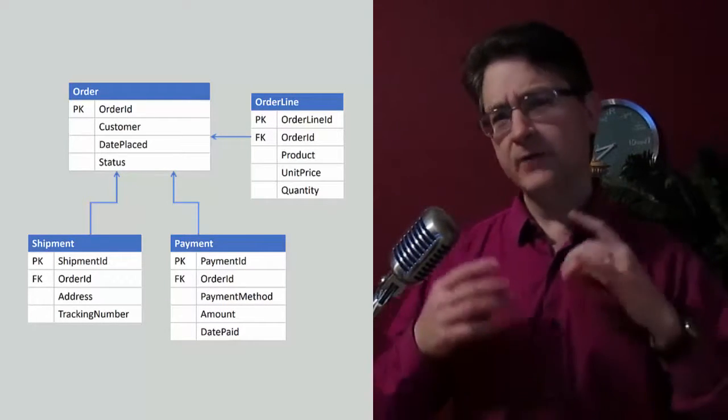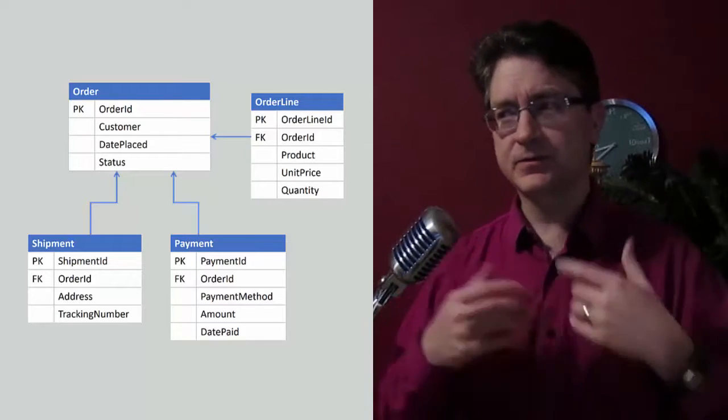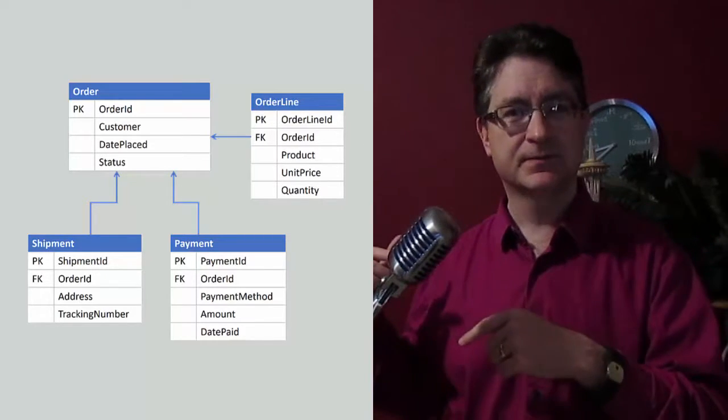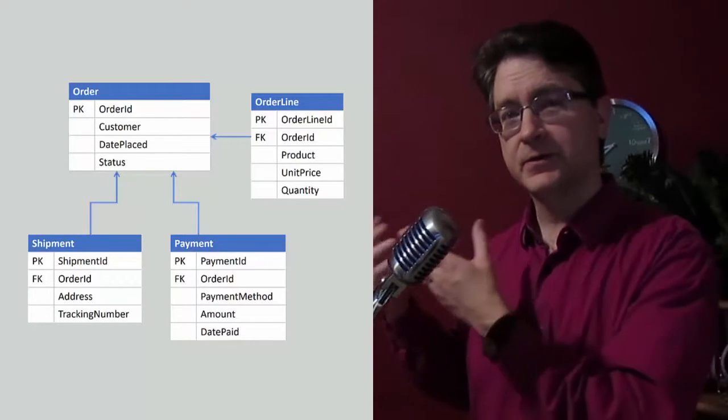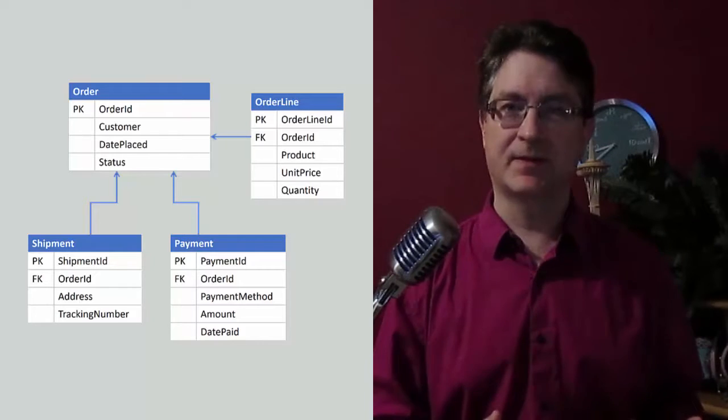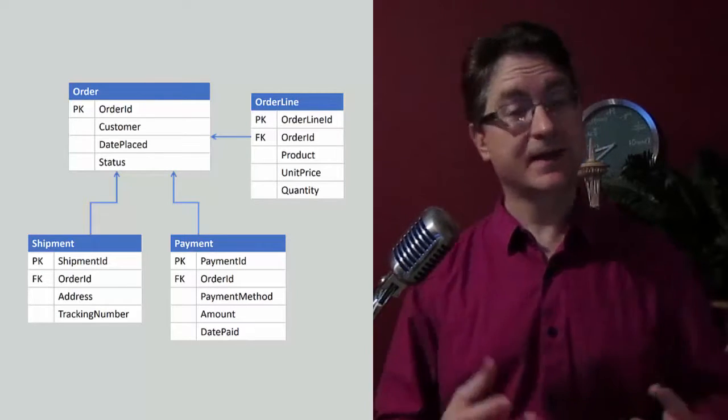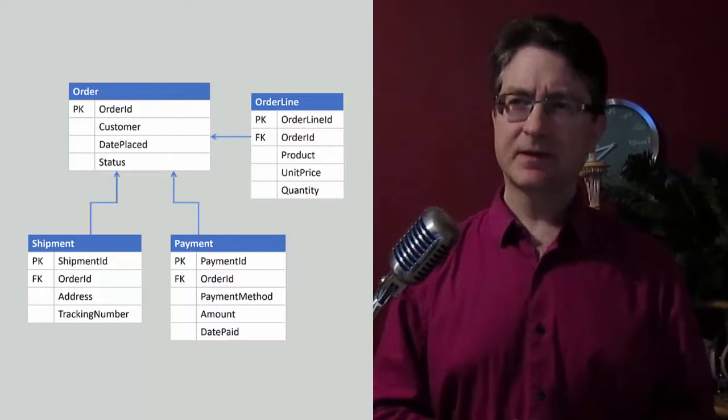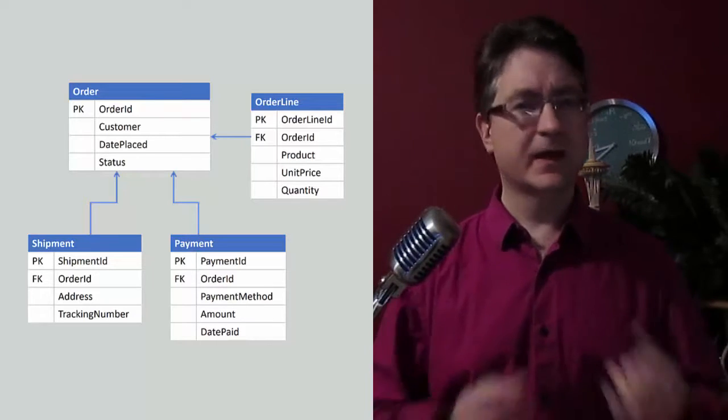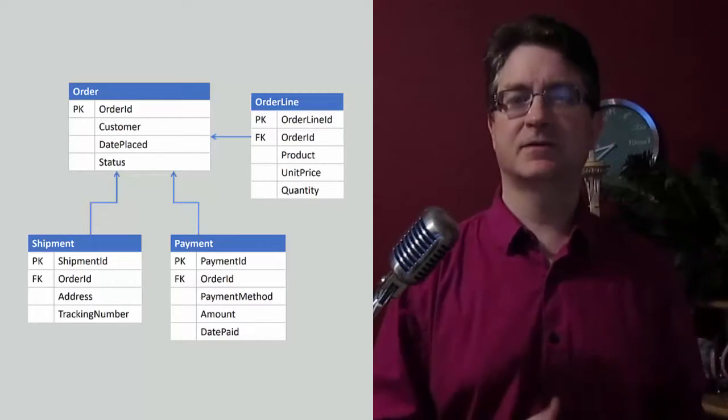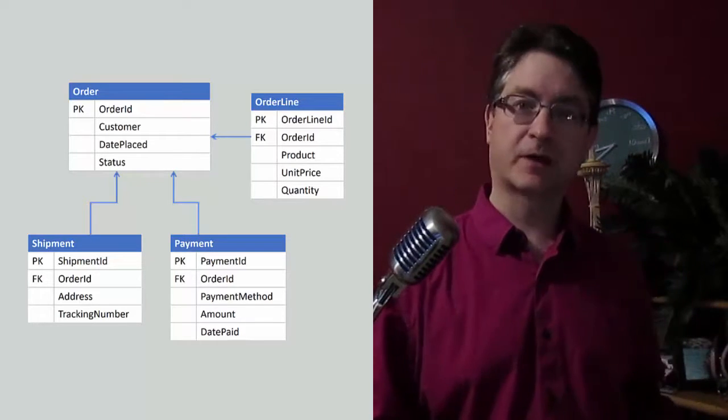Now, whenever we're updating the status, notice that something changes, that we're also inserting a shipment because we've just shipped the order. We're also inserting a payment because we've just received payment. So we're updating the status and inserting a child record. That's actually redundant, right? I don't need to do both of those things. I should be able to figure out what the status of this order is by just looking for those child records.